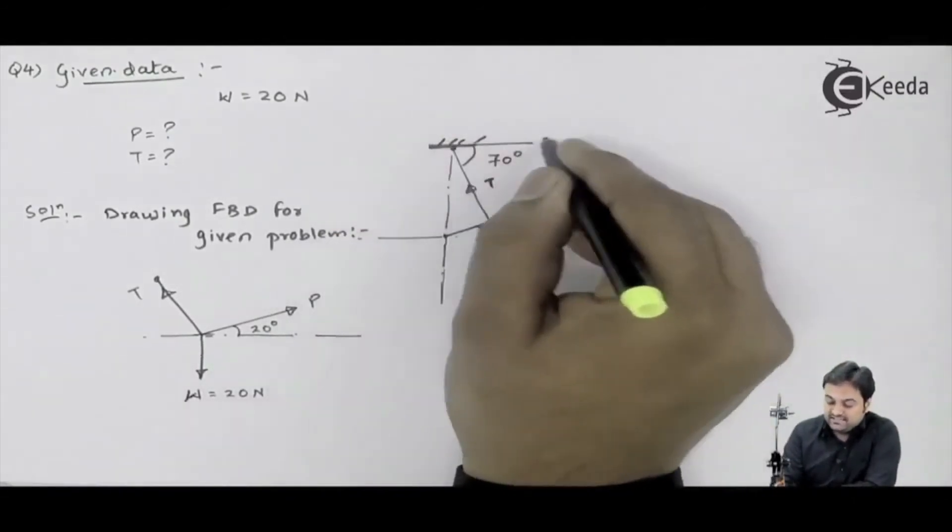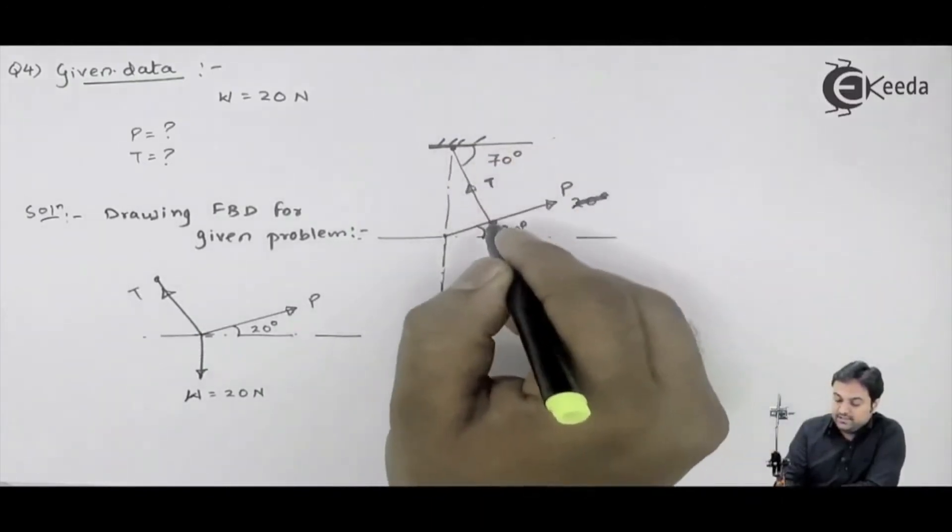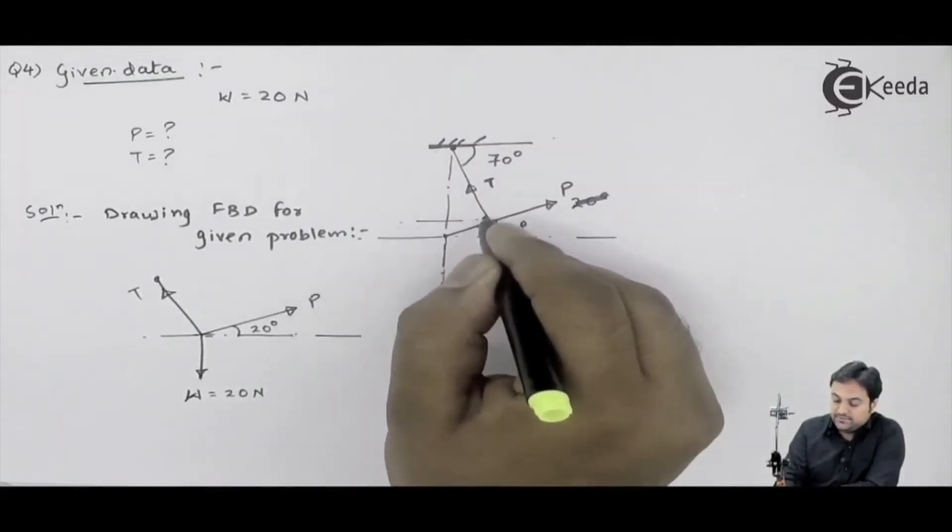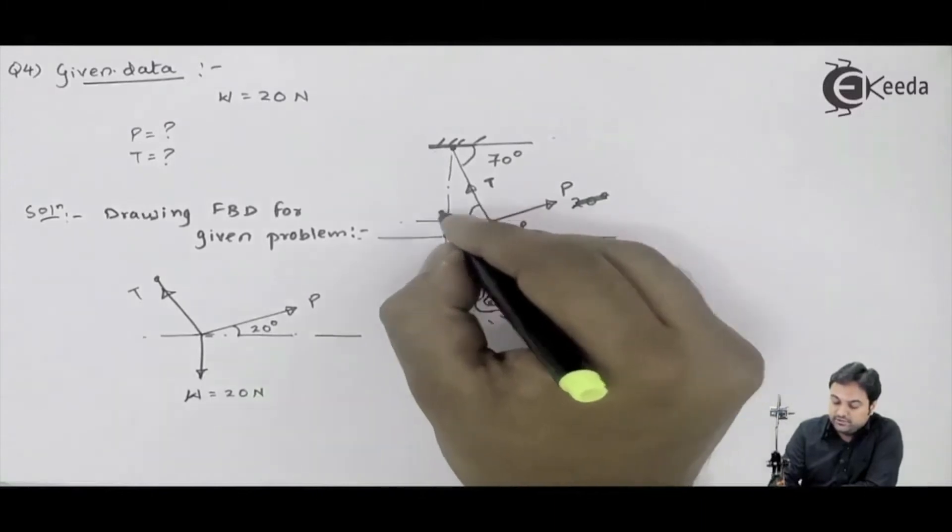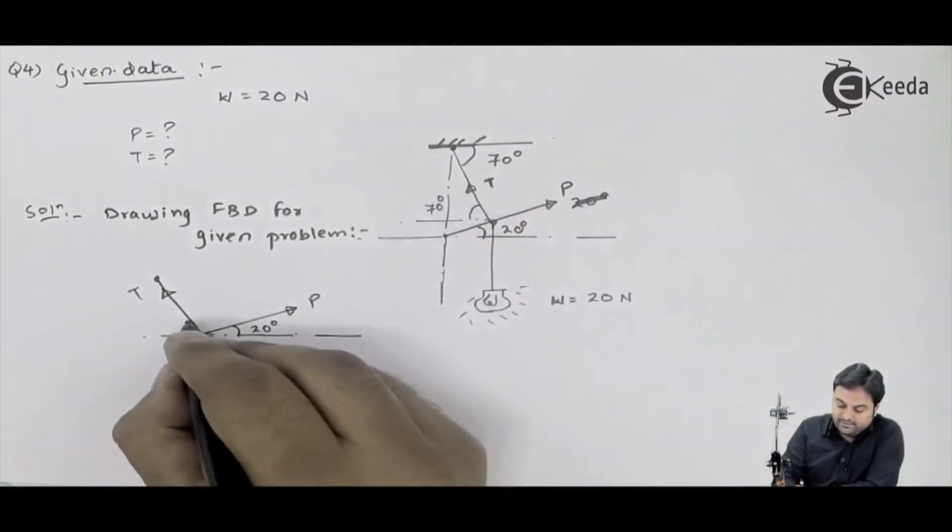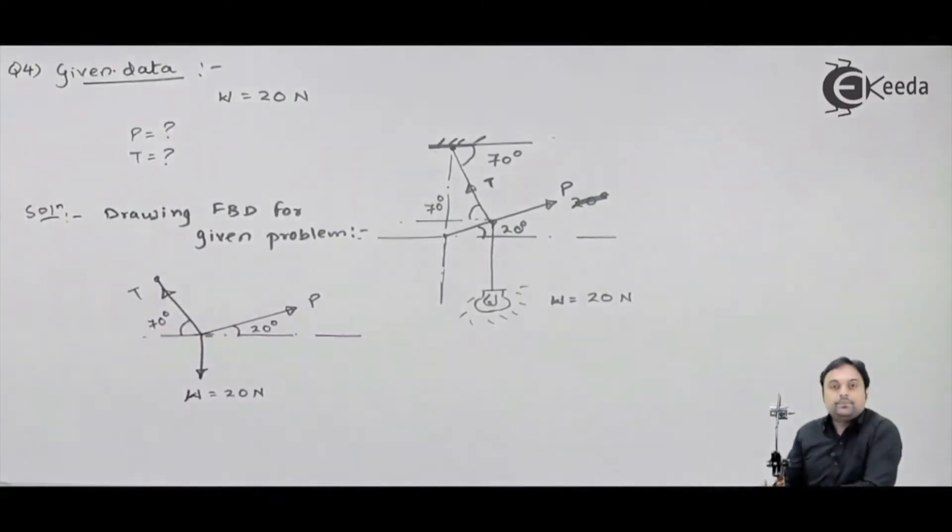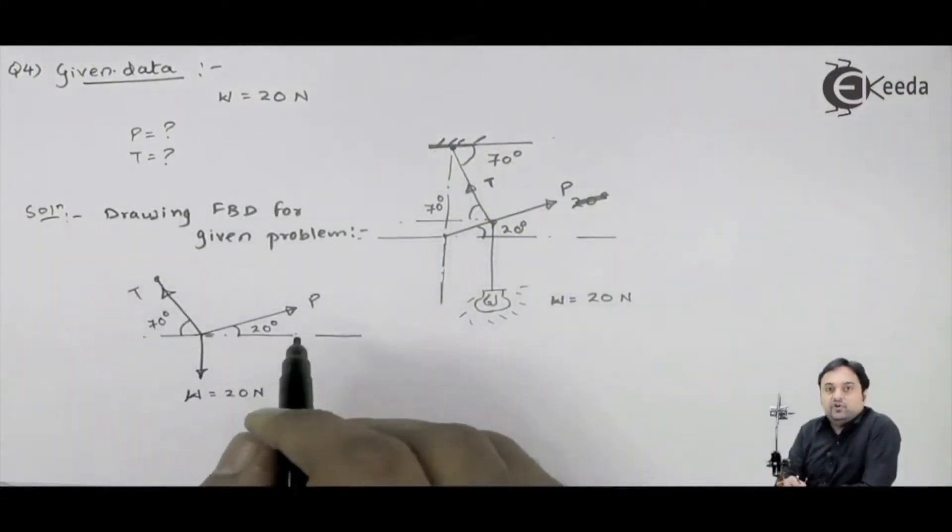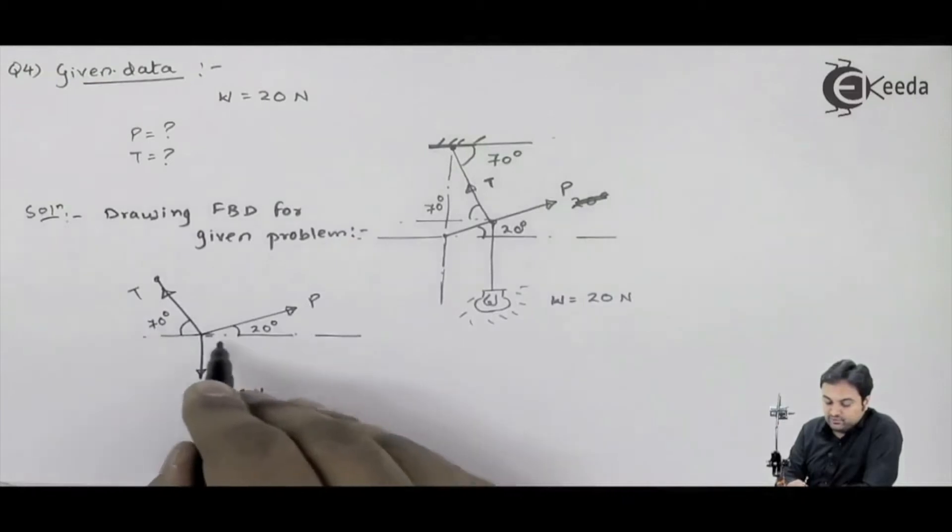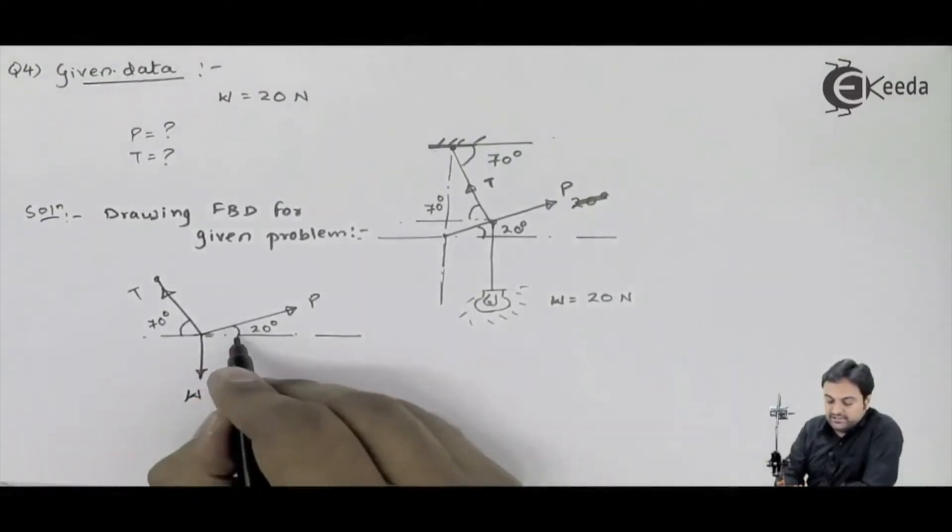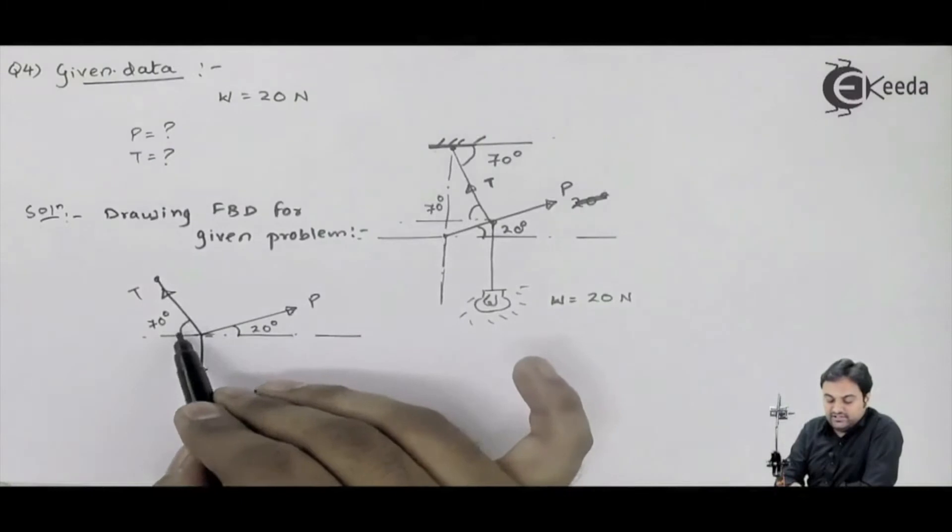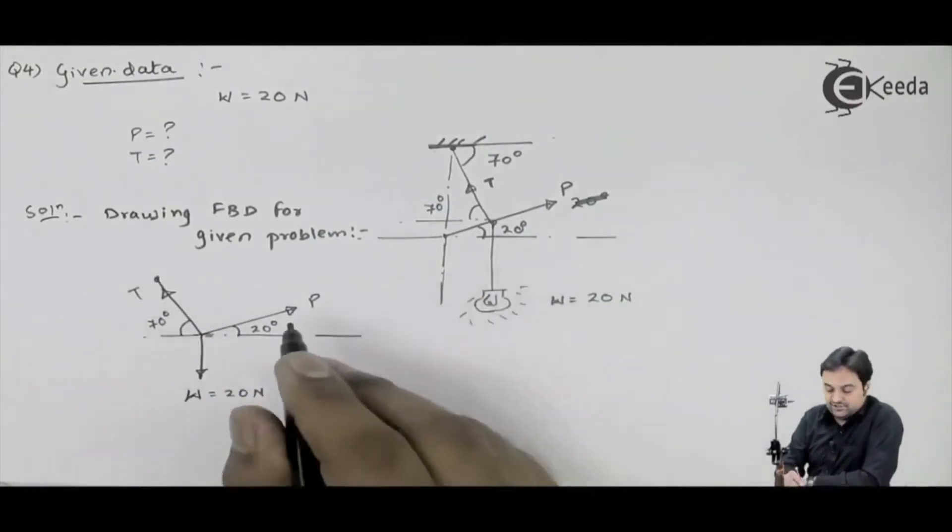This angle made by the string with horizontal is 70 degrees. So if this angle is 70, I can even say that with respect to this horizontal line also, it will be 70 degrees. Means here we have a case of alternate angles. So in case of FBD, free body diagram, first I have to mark the forces which I have already done. Next, I have to write the angles. 20 degrees is the angle made by the force, and 70 degrees is the angle made by the tension in the string.